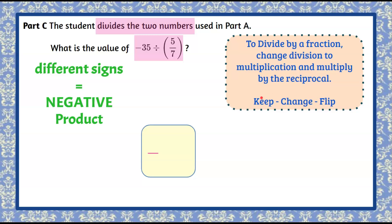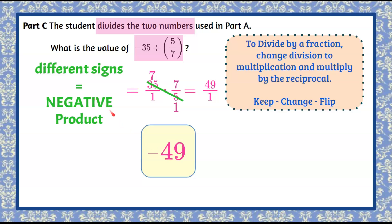We're going to rewrite this: negative 35 becomes 35 over 1. Change division to multiply, and the reciprocal of five-sevenths is 7 over 5 — we flipped the numerator and denominator. Now we multiply. 35 and 5 are both divisible by 5: 35 divided by 5 is 7, and 5 divided by 5 is 1. Now multiply the numerators: 7 times 7 is 49. Multiply the denominators: 1 times 1 is 1. And 49 over 1 is 49. We know it was negative from our rule, so our quotient is negative 49.